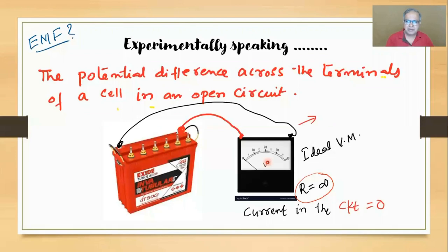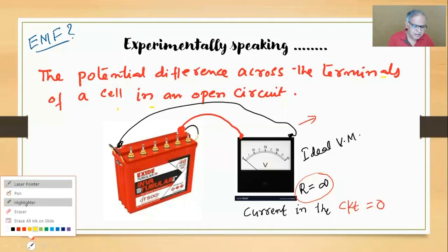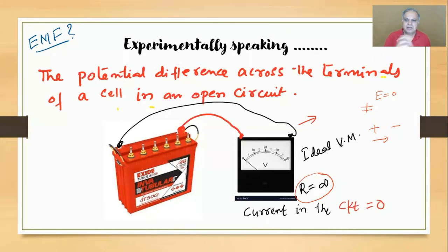How did this potential difference come about in a cell? Some chemical reactions happened and charge got separated. One electrode has become negative, the other electrode has become positive. Electrons are moved to one side, positive charges to the other side. When plus and minus get separated, that forms an electric field. So whatever happened in the electrolyte and electrodes - charge separation has happened - that means a potential difference and electric field are formed.